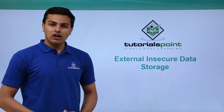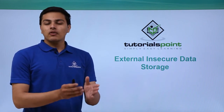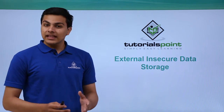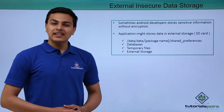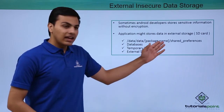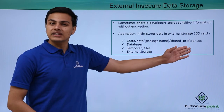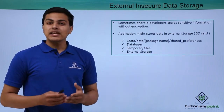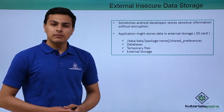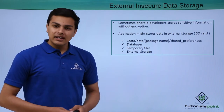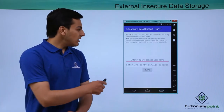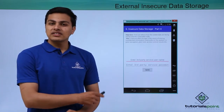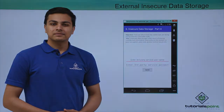In this video we will talk about another variation of insecure data storage — external insecure data storage. In external insecure data storage, our application might store data in external storage, that is the SD card. In the last video we saw that our application might store user sensitive information in temporary files without encrypting. In this challenge we will see where our application stores data in DIVA, and how this issue actually works.